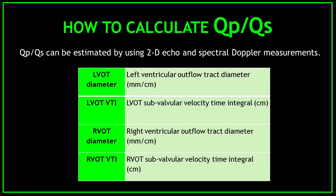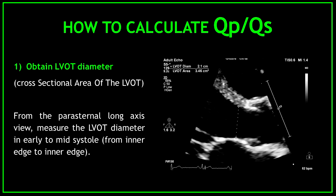First, the LVOT diameter. Second, the LVOT VTI. Third, the RVOT diameter. And fourth, the RVOT VTI. To calculate the QPQS ratio, I'm going to show you step by step how to obtain the measurements you need.